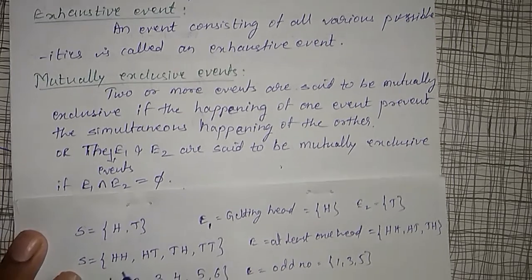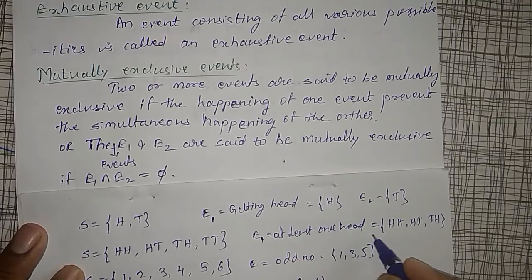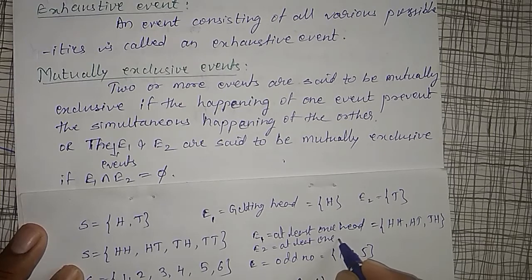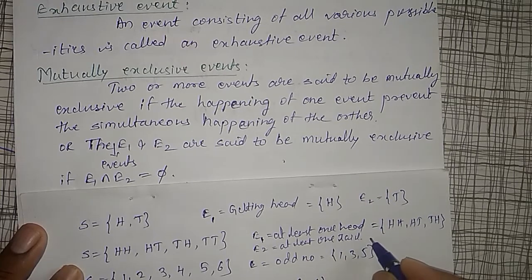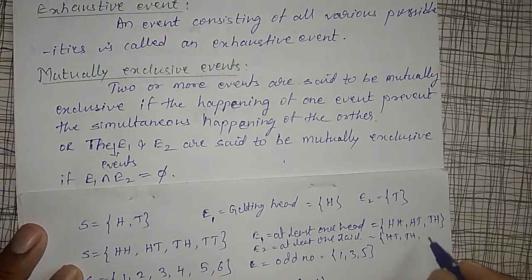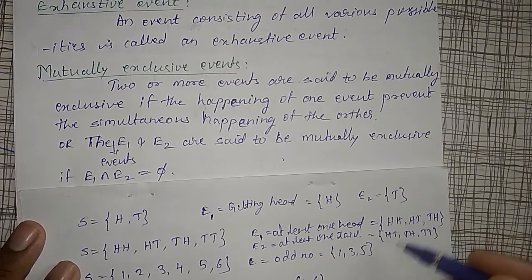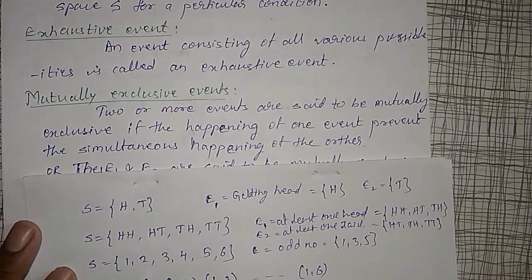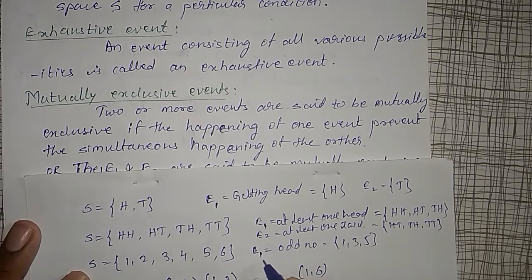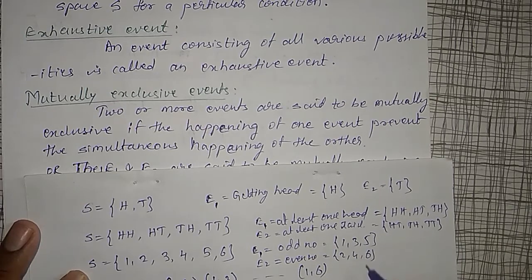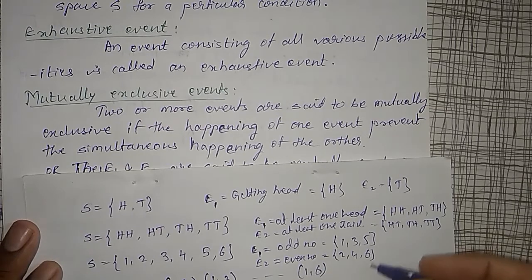In the second example, when two coins are tossed, E1 is defined as at least one head and E2 as at least one tail. E2 becomes {head-tail, tail-head, tail-tail}. Here, E1 and E2 have common elements — head-tail and tail-head — so E1 and E2 are not mutually exclusive. In the third example, when a die is rolled, E1 is an odd number {1,3,5} and E2 is an even number {2,4,6} — therefore E1 and E2 are mutually exclusive events.